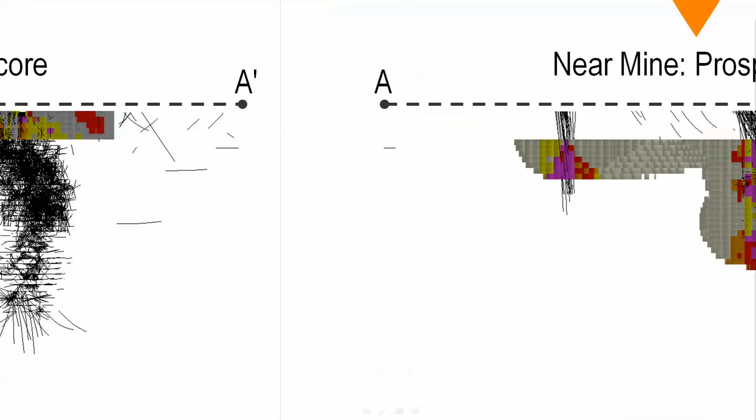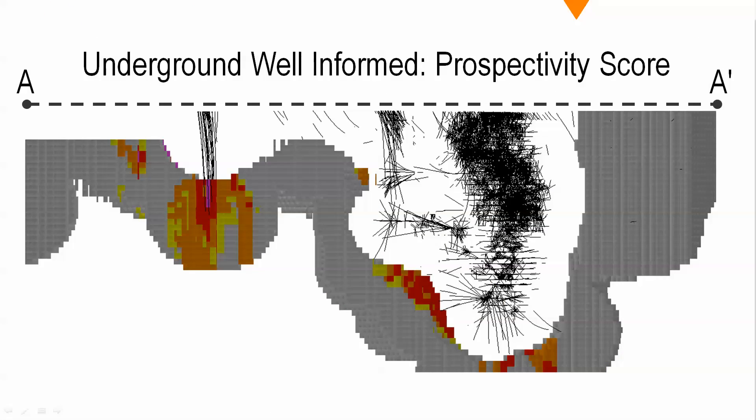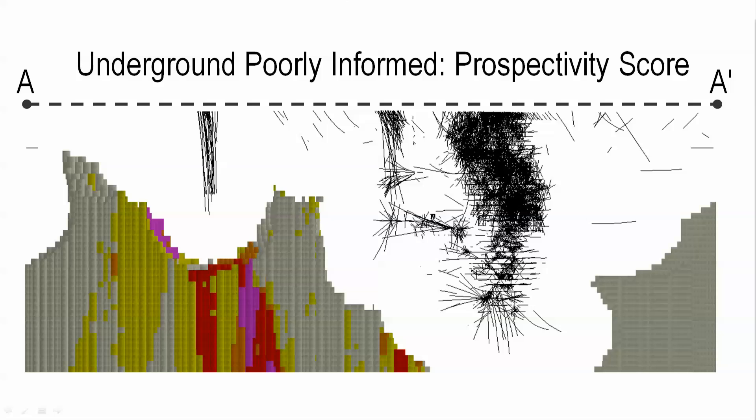The four formulas included open pit, near mine, well informed underground, and poorly informed underground.